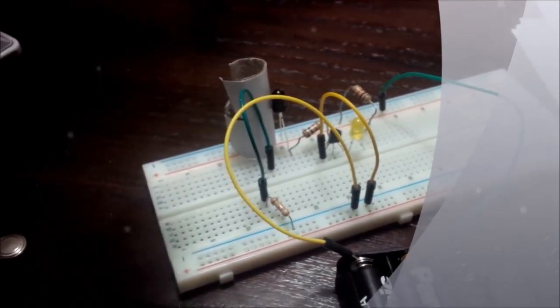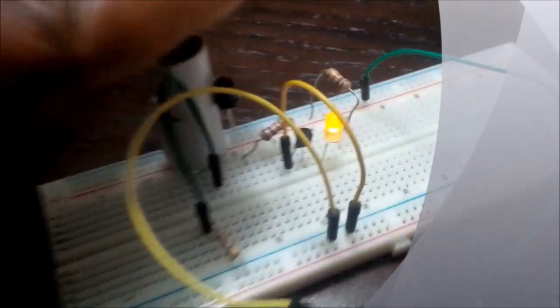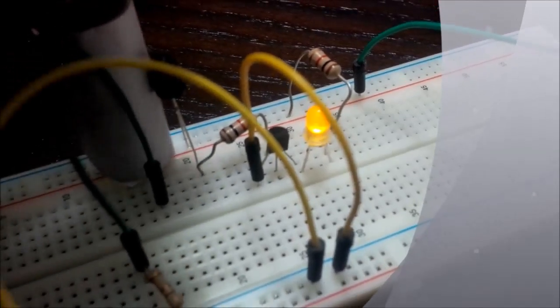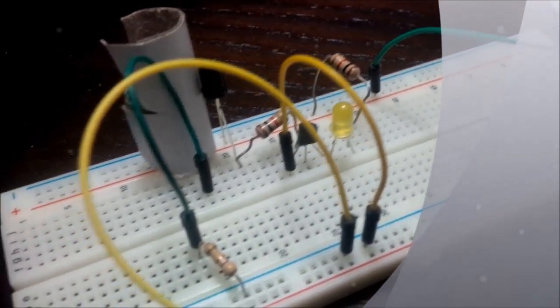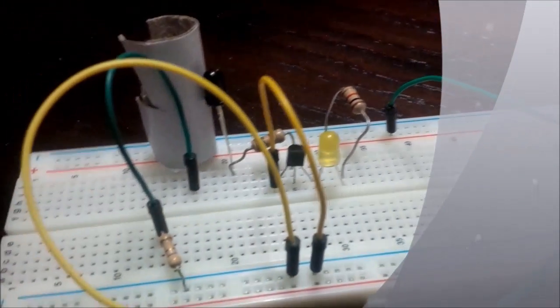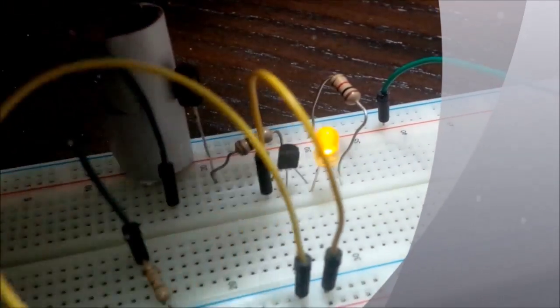Right here you see as my hand comes close to the circuit, an LED glows. When I go further away it goes off, when I come closer it glows, and so on. Now the reason for this is because of this infrared transmitter right here and an infrared receiver right there.